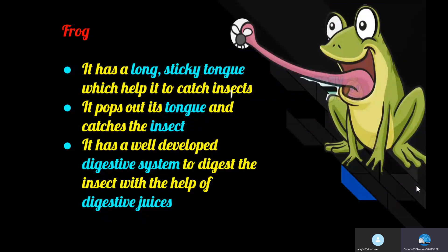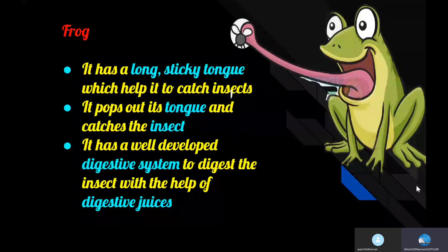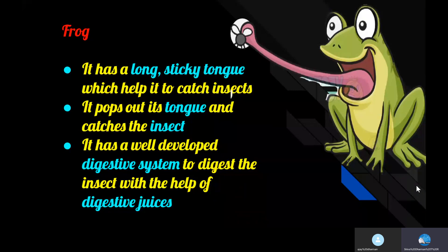The frog has a long, sticky tongue to catch insects. The frog possesses a well-developed digestive system to digest the food, which works with the help of digestive juices.